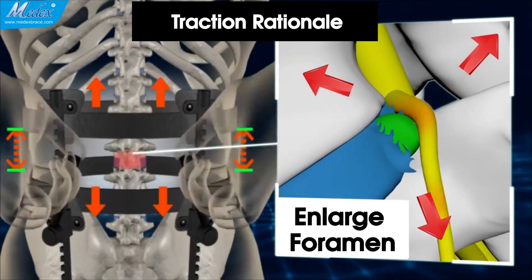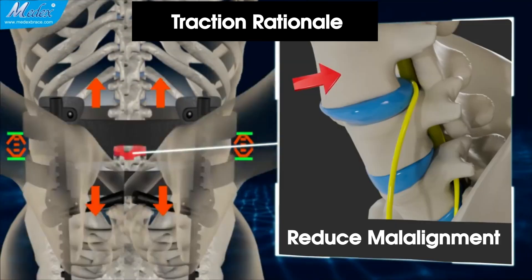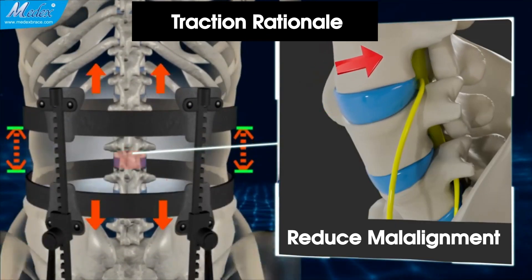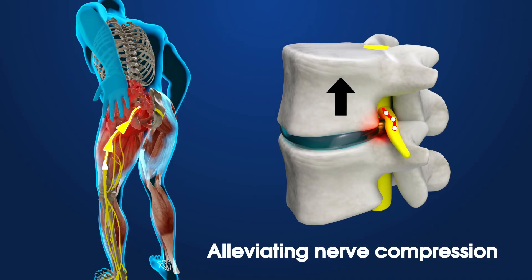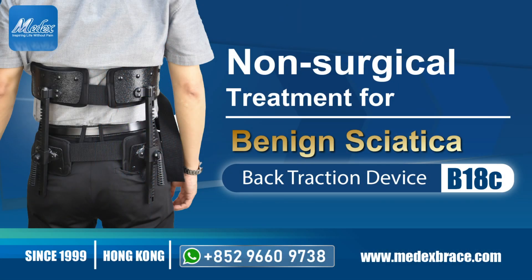This process can significantly enlarge the foramen and reduce vertebral malalignment, thereby alleviating nerve compression. In conclusion, this portable traction device is the best method to decompress the herniated disc for recovery. Interested parties, please contact us for more information.